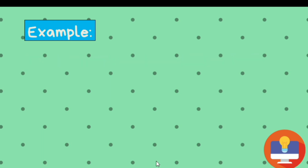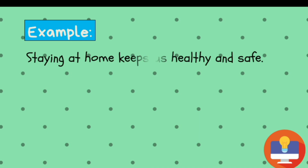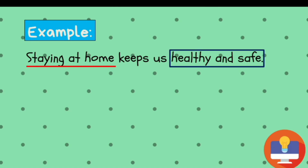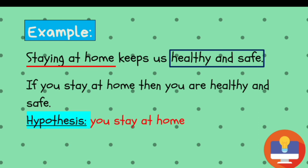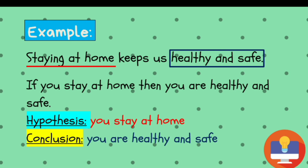For the next example, the statement is: staying at home keeps us healthy and safe. The statement is talking about staying at home, which keeps us healthy and safe. To transform it into an if-then statement, that would be: if you stay at home, then you are healthy and safe. The hypothesis is 'you stay at home,' and the conclusion is 'you are healthy and safe.'